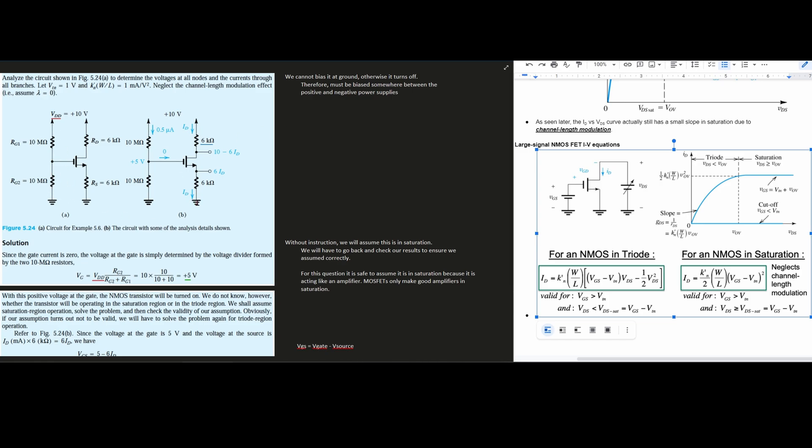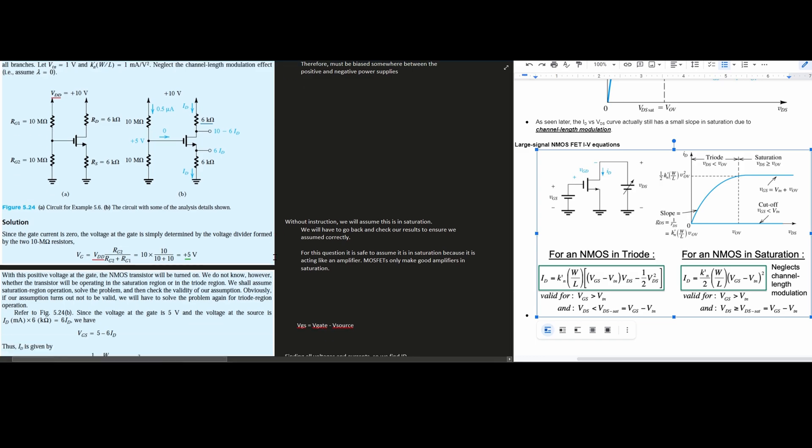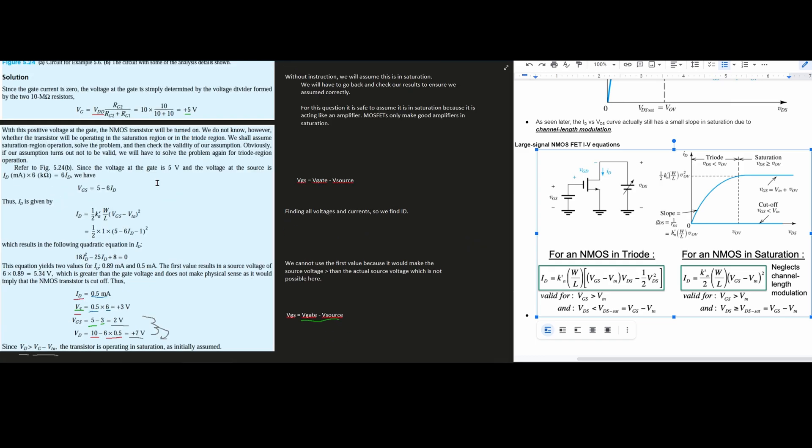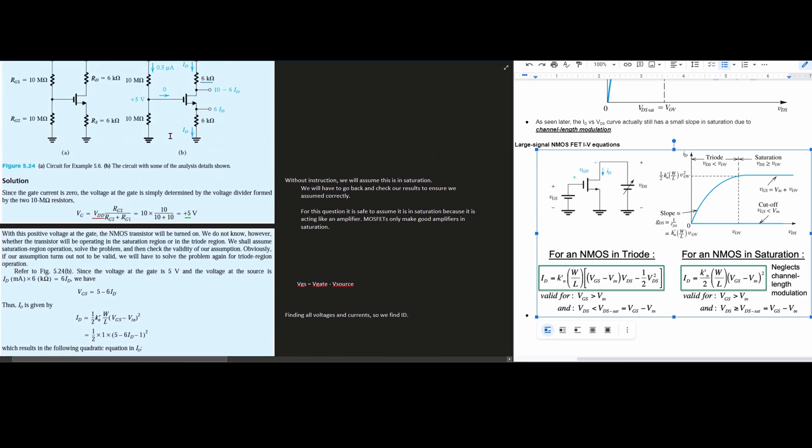Without instruction, we're going to assume that this is in saturation. We're going to have to go back and check our results to ensure we assume correctly, otherwise we'll have to redo this again, but for triode, not saturation. For this question, it's safe to assume it's in saturation because it's acting as an amplifier, and MOSFETs only make good amplifiers in saturation.